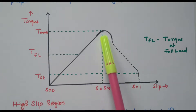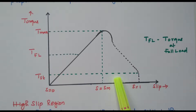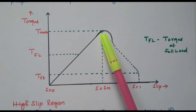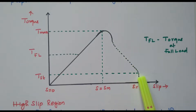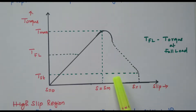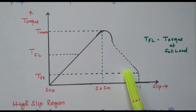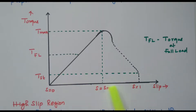Beyond the maximum torque, if you load the motor, the speed decreases slowly and reaches 0, and the motor will stop. We can load the motor only up to the maximum torque. Beyond maximum torque, if the motor is loaded, the torque decreases and becomes 0, so the motor will stop. This is the low slip region and high slip region of the entire torque slip characteristics.